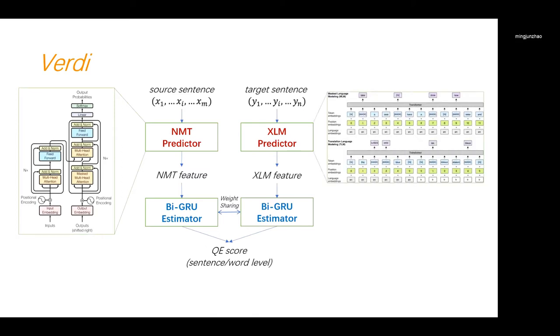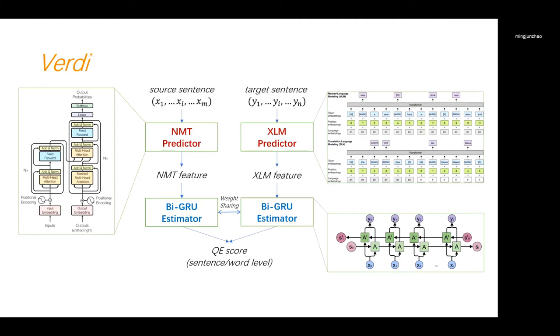The XLM model predictor uses a pre-trained cross-lingual language model to improve the feature extraction. Unlike monolingual language models, such as BERT, XLM models are also pre-trained on parallel corpora and construct cross-lingual representations on text, which suit better to the translation QE task. Then, we incorporated two BiGRU estimators with weight sharing to map the NMT features and the XLM features to the final QE prediction. Next, we will introduce these models in detail, starting from the NMT predictor.